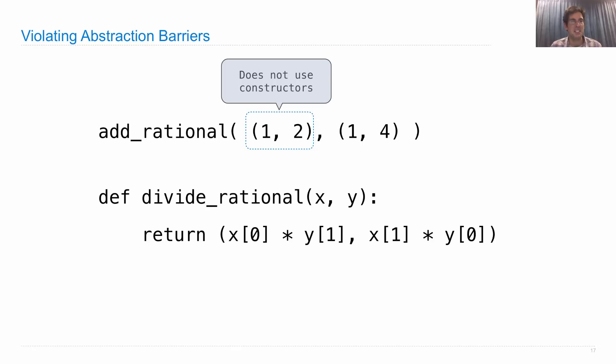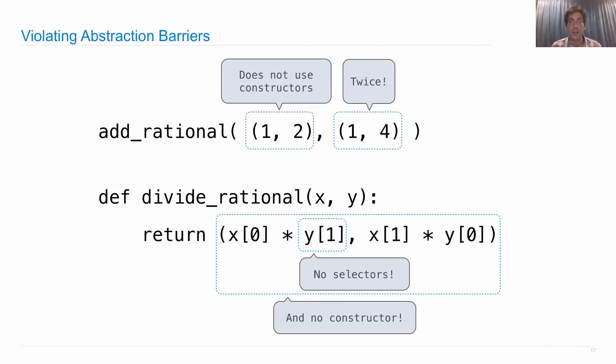So here are the problems I see. It doesn't use a constructor, which means that I can't change my representation without changing this piece of code. It does it again. Now I'm getting a little bit upset. We failed to use a selector here. And what did we return?